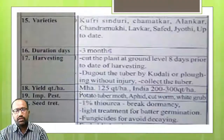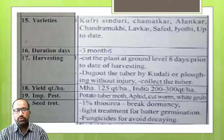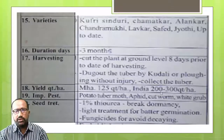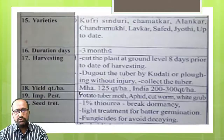Yield: 125 quintal per hectare. The average yield of potato in India is 100 to 300 quintal per hectare.